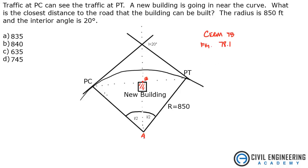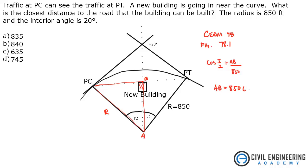This one's pretty straightforward. All I'm going to do is look at this triangle right in here. If we take the cosine of I over 2, that should equal AB over R, because this is R, and that's 850 feet. So if we want to solve for AB, that's just 850 times cosine of I over 2. I was given as 20 degrees. Punch that out — AB, I get 837.09 feet.